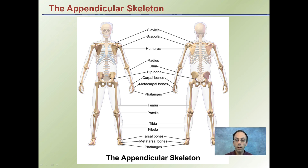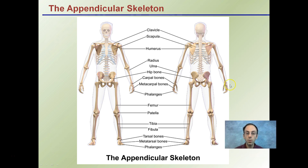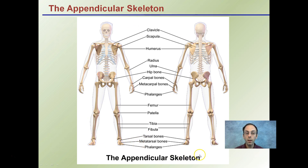Speaking of the appendicular skeleton, here are some bones you should become familiar with and be able to identify: the clavicle, the scapula, the humerus, the radius, the ulna, the hip bone, the carpals, the metacarpals, the phalanges, the femur, the patella, the tibia, the fibula, the tarsals, metatarsals, and phalanges — just a basic overview of the appendicular skeleton.